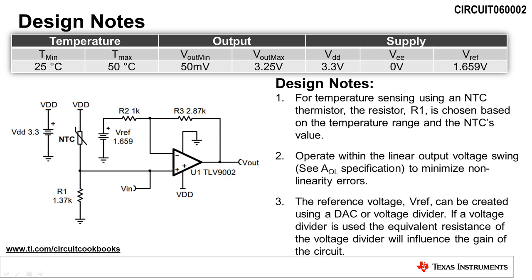When designing a temperature sensing circuit with an NTC thermistor, there are a few design notes to be aware of. First, resistor R1 is chosen based on the temperature range and the NTC's value. Next, be sure to always check the linear output swing of the amplifier, which is usually given in the condition section of the AOL datasheet specification. Finally, the reference voltage, VREF, can be created using a DAC or voltage divider.